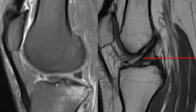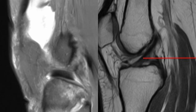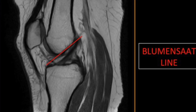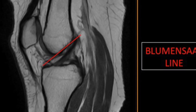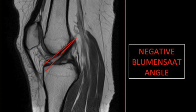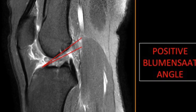Before we go into tear proper, a few important landmarks. The Blumensat line courses parallel to the roof of the intercondylar notch along the posterior surface of the femur. The Blumensat angle is formed by this Blumensat line and a line along the margin including the distal portion of the ACL. A negative or normal Blumensat angle occurs when the apex of the angle is directed superiorly, whereas a positive or abnormal Blumensat angle occurs when the apex of the angle is directed inferiorly.